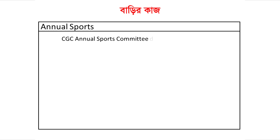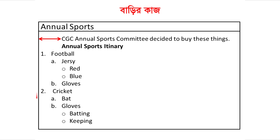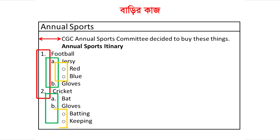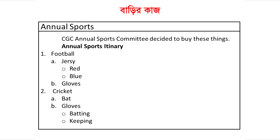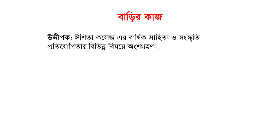This is the first paragraph of the CGC Annual Sports Committee. The 1-year grades are featuring a list for the football team, including items like a jersey or a glove. Every grade with these grades is the best. You can see that you need to make a list in this place.